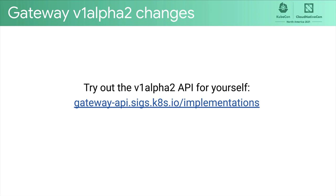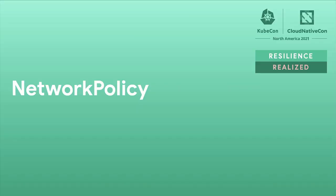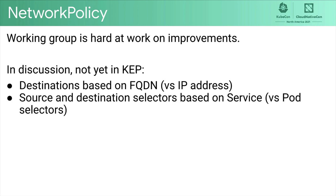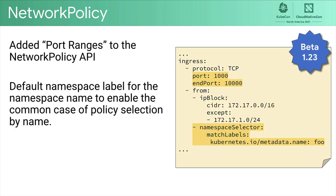The network policy working group has been hard at work on improvements and extensions to the current API. There are a number of threads that are close to KEPs. The first is the use of DNS names — i.e., FQDNs — as destination selectors. The second is the use of services as a selector for source or destination versus just using pod selectors. We have also brought a couple of network policy features to beta in 1.23: first, port ranges in the network policy API, letting you specify an entire range of ports rather than one at a time; and second, a default namespace label with the value of a namespace name, enabling the common case of policy selection by name.